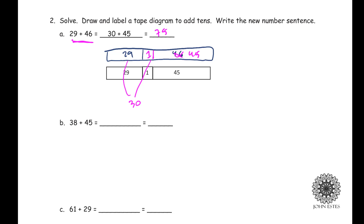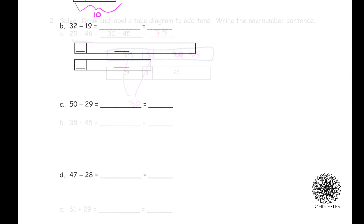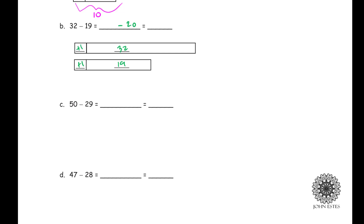Let's do some subtraction first. In part B I have 32 minus 19. I fill out the rectangles — the bottom one has 19 and the top one has 32. I want to subtract a multiple of 10 instead of 19, so I write plus 1, giving me a minus 20 in the new number sentence. If I added 1 to the 19, I also add 1 to the 32 to get 33. So 32 minus 19 is the same thing as 33 minus 20, and subtracting 20 is easier than subtracting 19.